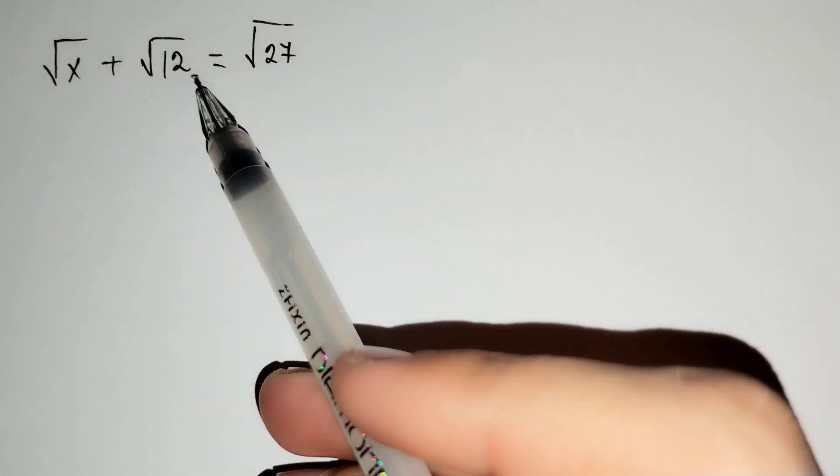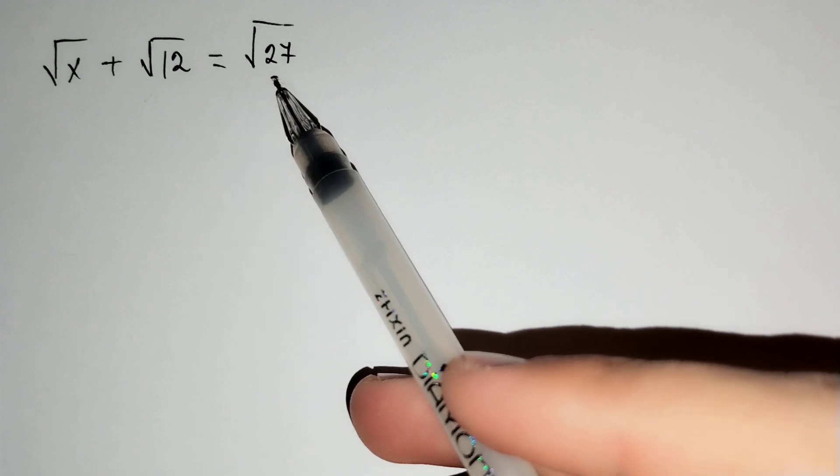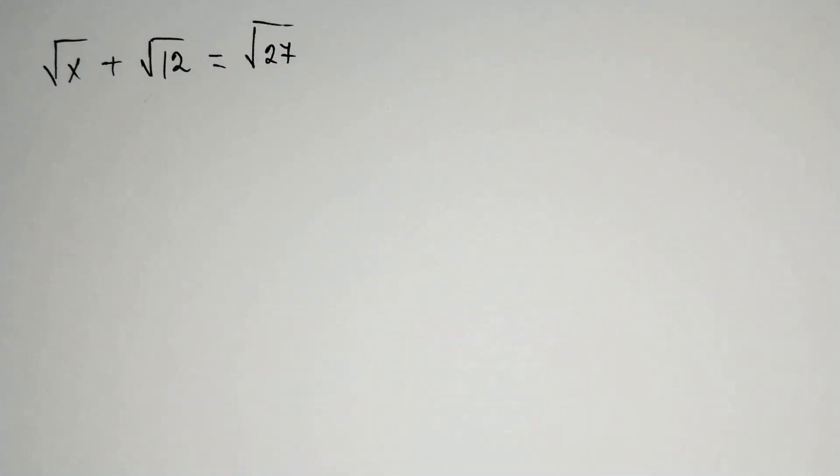The square root of x plus square root of 12 equals the square root of 27. How should we solve this problem?